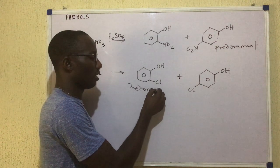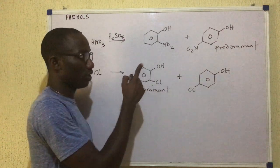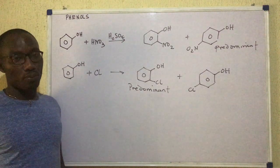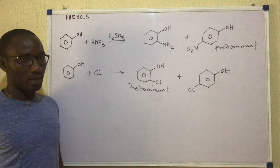So you see that in the previous case, the para-product was predominant. Whereas in this reaction with chlorine, the ortho-product becomes predominant.